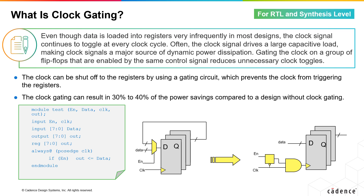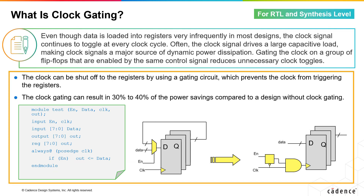Clock gating is another very common and effective technique used for dynamic power reduction. In this case, the clock can be shut off to the sequential logic by using a gated circuit that prevents the clock from triggering the register. Typically, clock gating can result in 30% power saving compared to a design without clock gating.